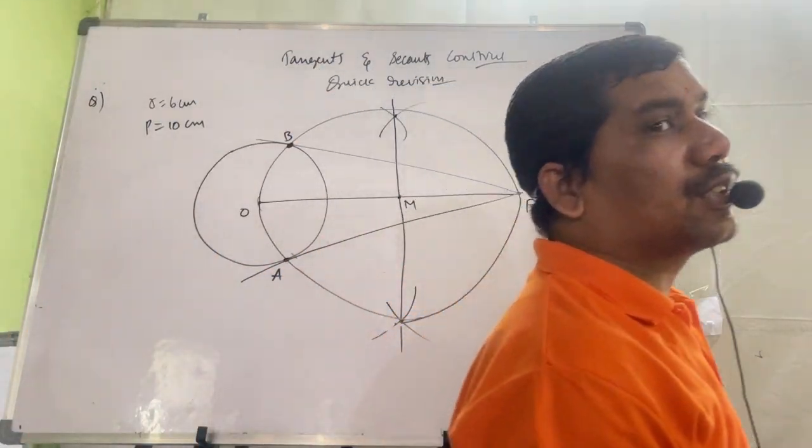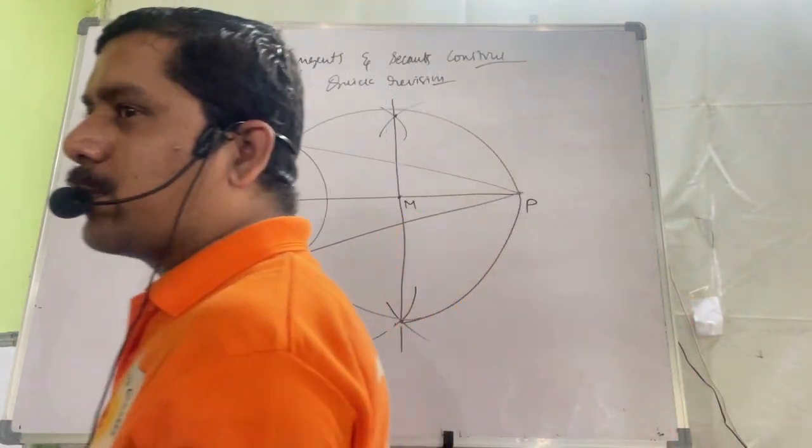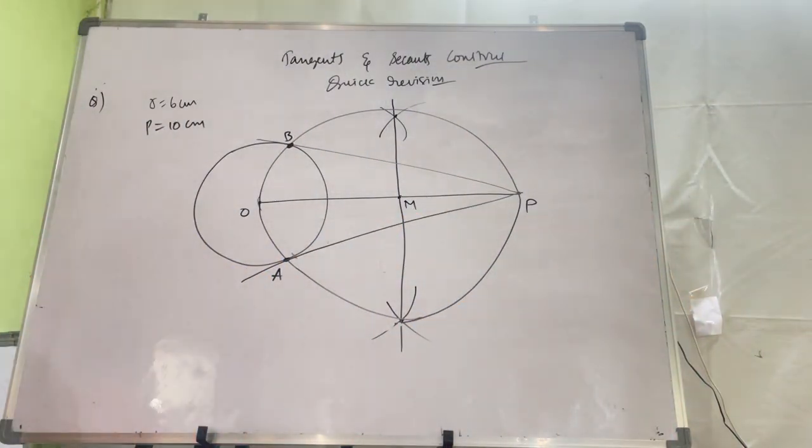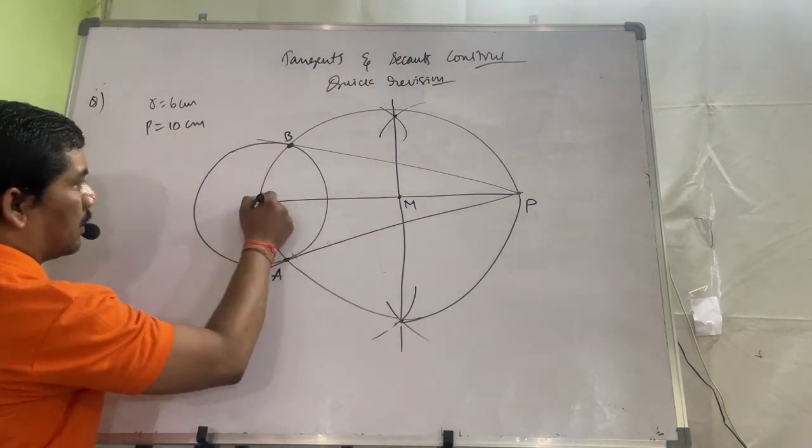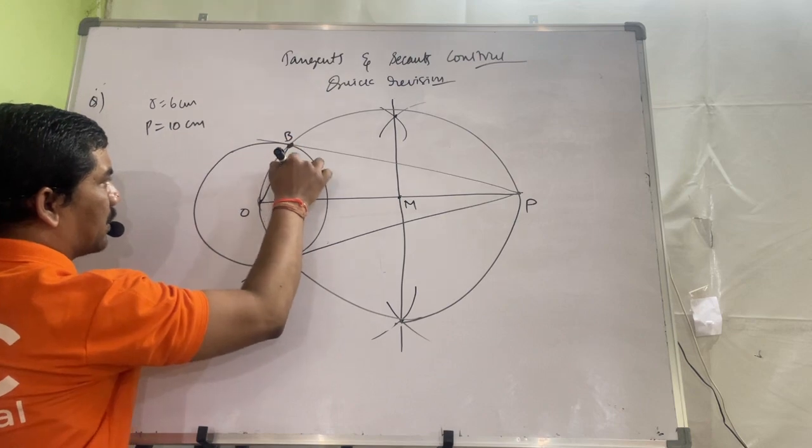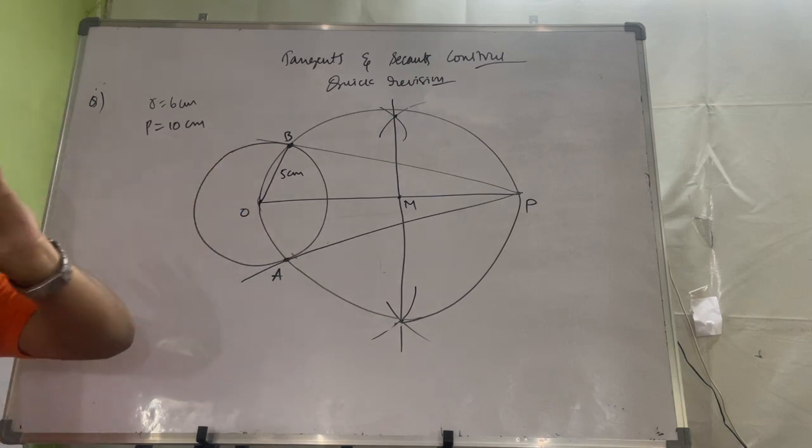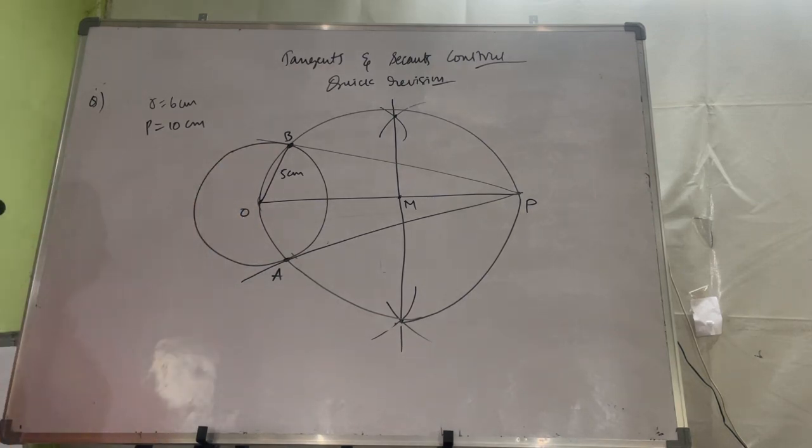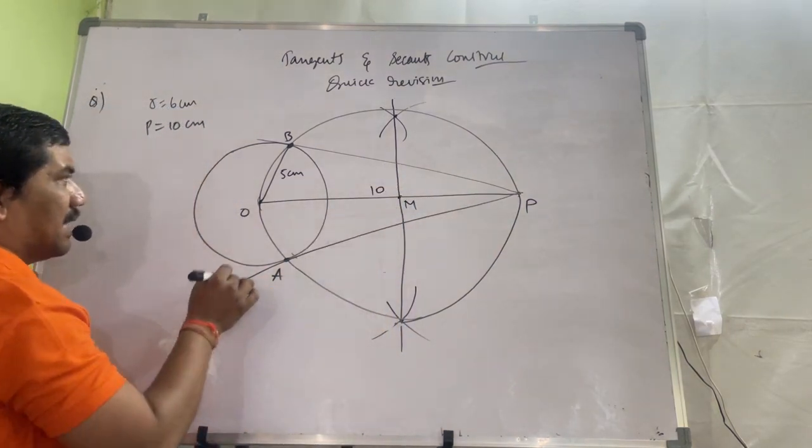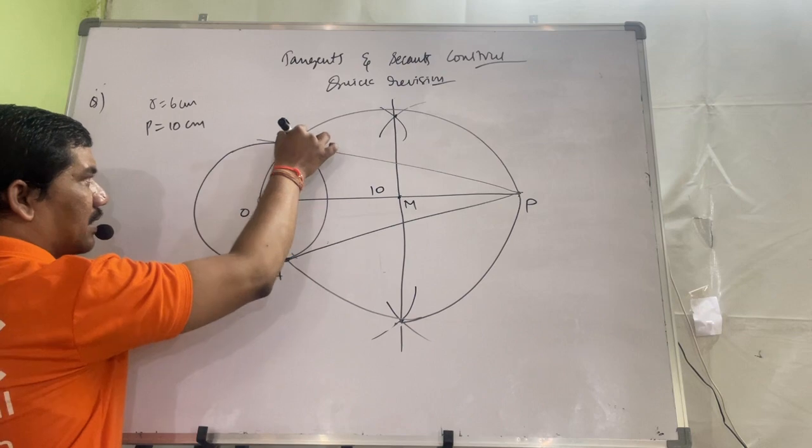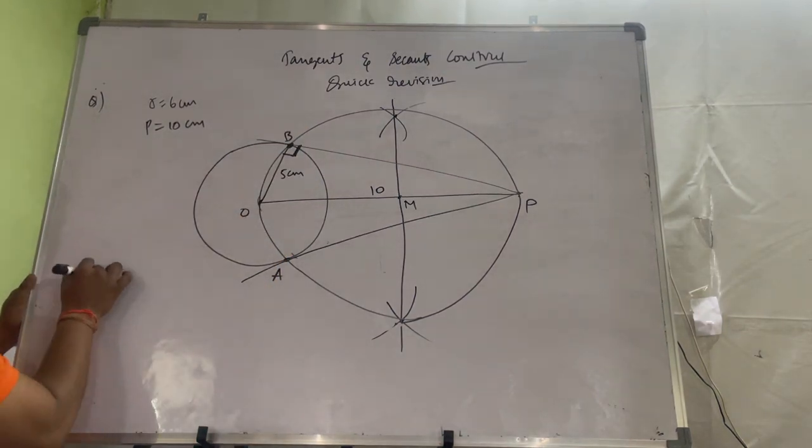After that, sometimes they will ask you to verify also. How to verify, I'll say you. Suppose here to here, you know this is 5 cm. Now you should measure length of the tangent by using ruler. Now where is 90 degree? Here is 90 degree.